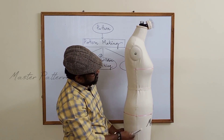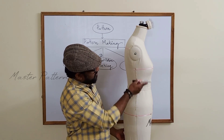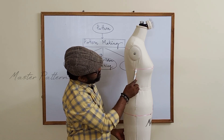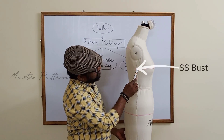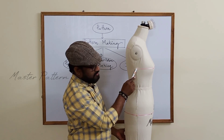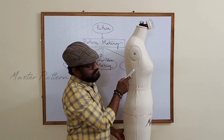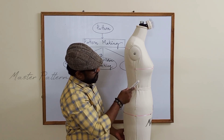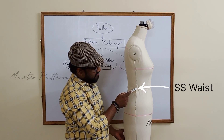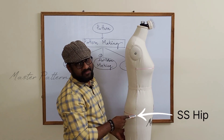Coming to the side seam, there are three levels here: bust level, waist level, and hip level. This is called the side seam bust level. This is the side seam waist level, and this is the side seam hip level.